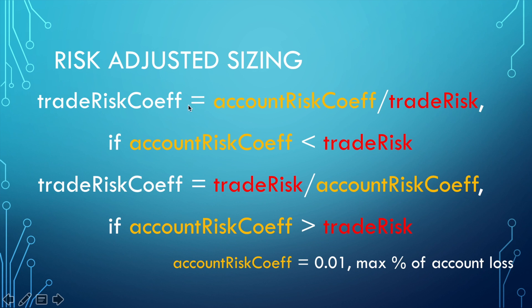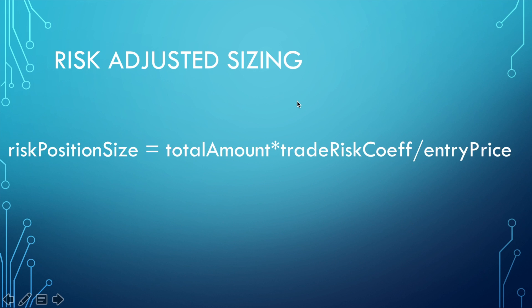This trade risk coefficient equals the ratio between the account risk coefficient — which has a constant value of one-hundredth (0.01), representing the maximum 1% of account loss per trade — and the trade risk calculated at the previous step. This is for the case where the account risk coefficient is less than trade risk; if it is greater, then we divide trade risk by the account risk coefficient. Finally, the risk-adjusted position size equals the total amount of funds multiplied by the trade risk coefficient, with that amount divided by the entry price. This formula is used whether we plan to open a long or short position.